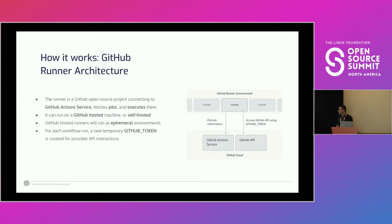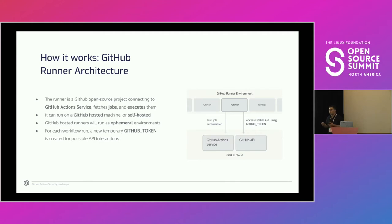For each workflow run, a new temporary GitHub token is created. This token is used inside the workflow to invoke various GitHub API requests, and we'll soon see what that token is and why it's created.